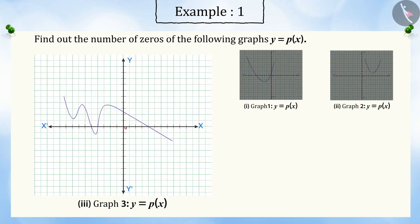In this third graph, you can see that it cuts the x-axis three times. Hence, the number of zeros will be three in this case.